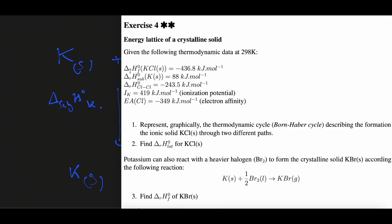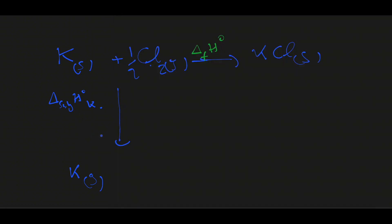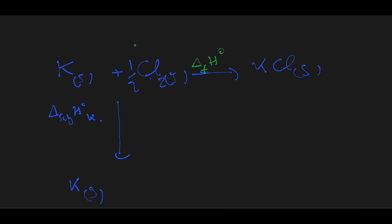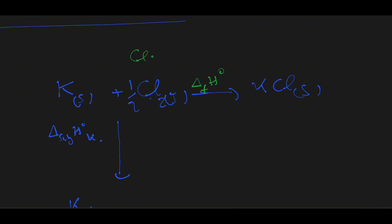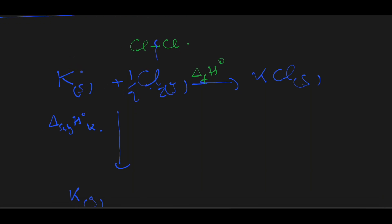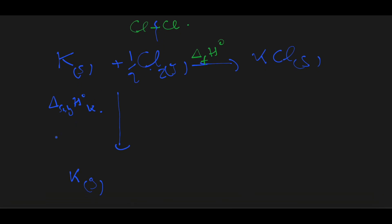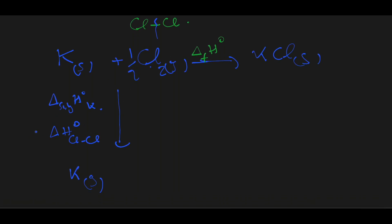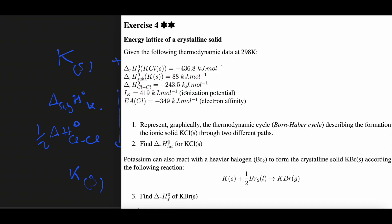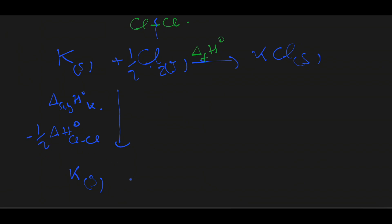The sublimation energy is given and is equal to 88 kJ/mol. For chlorine, we have a diatomic molecule, so we need to break this bond by providing the bond energy corresponding to the Cl-Cl bond, which equals delta H(Cl-Cl). Here we take half of this value, and because it is given as a negative value, we multiply by minus one.